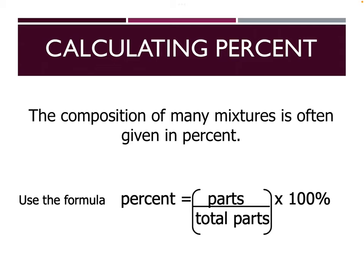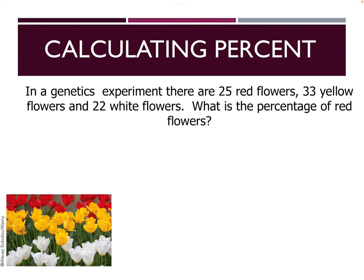Our first topic is calculating percent. Generally, if we're thinking about the percent of a mixture, we can think about using the part over the total. If I was to think about how many girls there were in our class, I could put the number of girls divided by the total people in the class, and that would give me the percentage. We can do the same thing with compounds — the total mass of one element divided by the mass of the compound times 100.